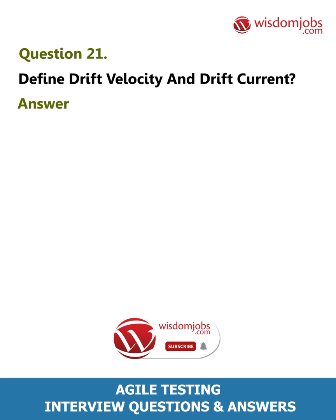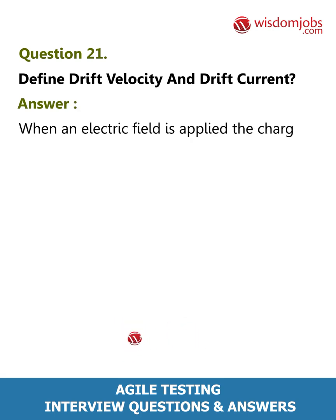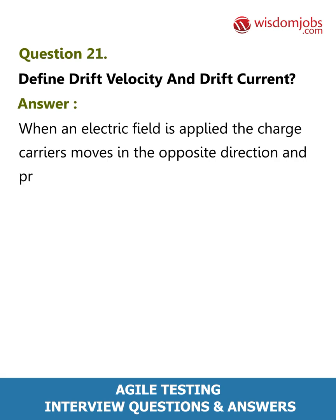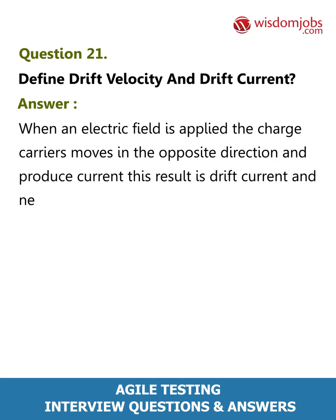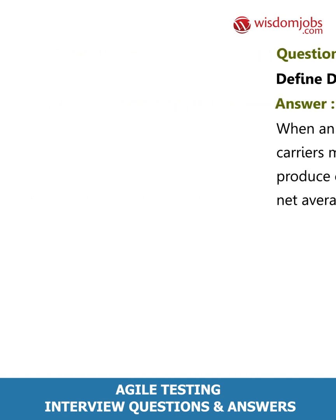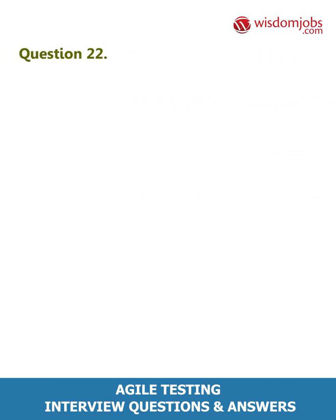Question 21: Define drift velocity and drift current. Answer: When an electric field is applied, the charge carriers move in the opposite direction and produce current. This result is called drift current, and the net average velocity is called drift velocity.